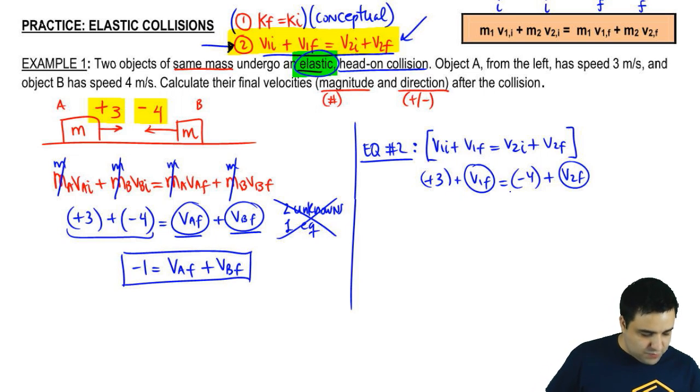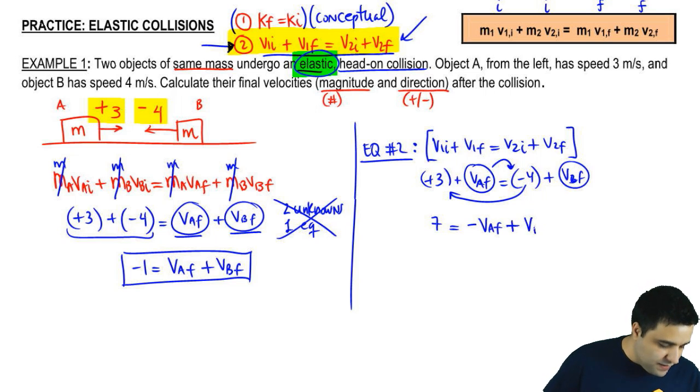Let's do the same thing here. Let's move this number over here so that I have numbers on the left and letters on the right. So, the 4 goes over here. I get a 7 equals, and then this guy goes over here, and then it's going to be a negative. Negative, this is A and B actually. Negative VAF, positive VBF.